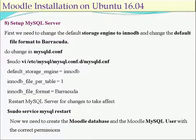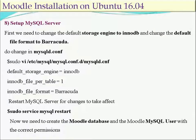Then set up the MySQL server. The MySQL configuration file is stored in the /etc folder of the Linux operating system, which stores all system files. We search for the MySQL configuration file (mysqld.conf) and update it by adding three lines: default storage engine = InnoDB, InnoDB file per table = 1, and InnoDB file format = Barracuda. These three lines are inserted at the end of the file. Then restart the MySQL server using: sudo service mysql restart. This command restarts the MySQL server and applies the changes.